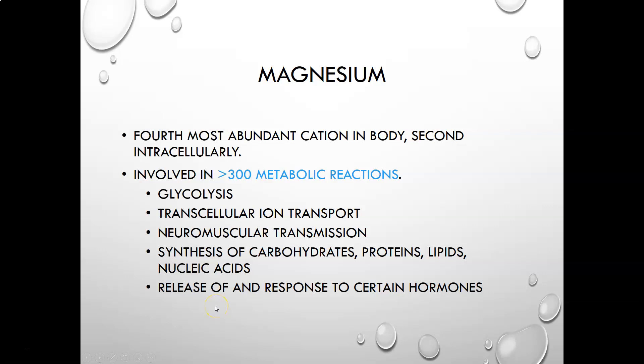Magnesium is the fourth most abundant cation in the body. It is the second most abundant intracellularly, behind potassium, which is the most abundant. It is involved in more than 300 different metabolic reactions, making it really important to metabolism. It is involved in glycolysis, transcellular ion transport, neuromuscular transmission, synthesis of carbohydrates, proteins, lipids, and nucleic acids, and release of and response to certain hormones.